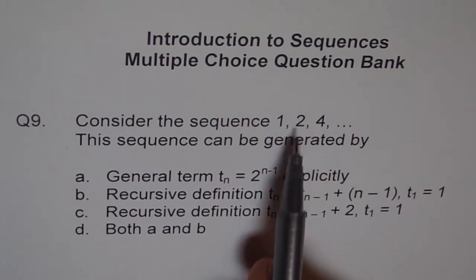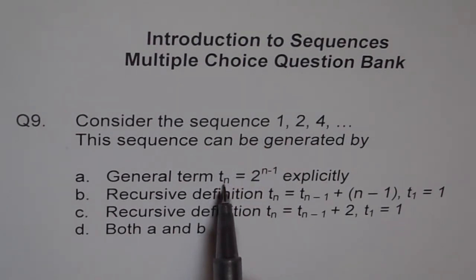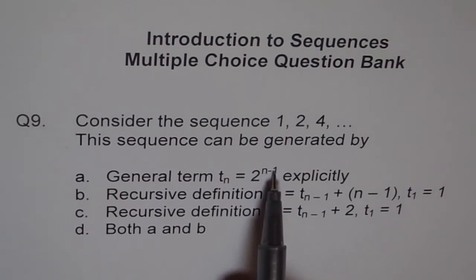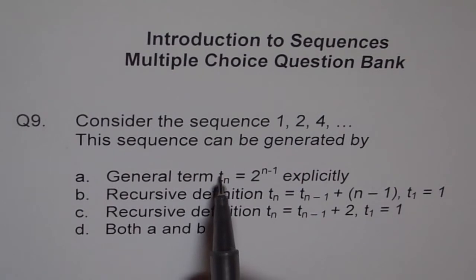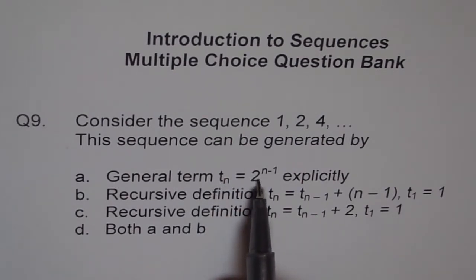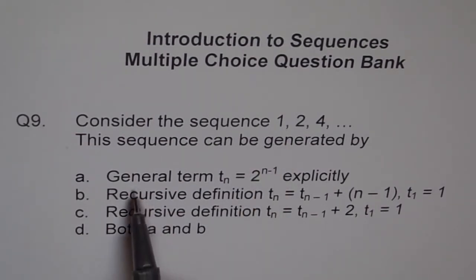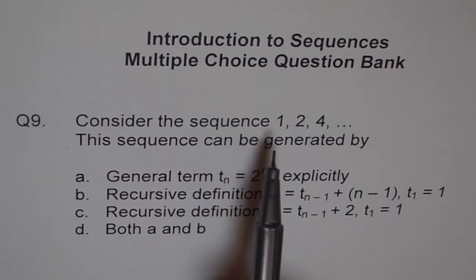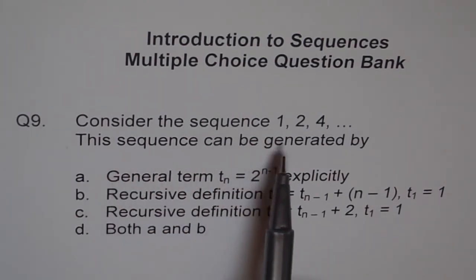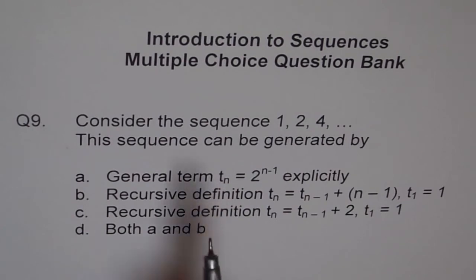If I want the second term, I will put 2 here. So T_2 will be 2 to the power of 2 minus 1, 2 minus 1 is 1, 2 to the power of 1 is 2, so we get that term. T_1 is 2 to the power of 1 minus 1 which is 2 to the power of 0, so we get the first term. So this general term T_n is definitely a right way of representing 1, 2, 4 sequence.